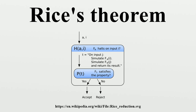Such as a finite automaton. It is important to note that Rice's theorem does not say anything about those properties of machines or programs that are not also properties of functions and languages. For example, whether a machine runs for more than 100 steps on some input is a decidable property, even though it is non-trivial, since two different machines implementing exactly the same language might require a different number of steps to recognize the same input. Similarly, whether a machine has more than five states is a decidable property of the machine, as the number of states can simply be counted.